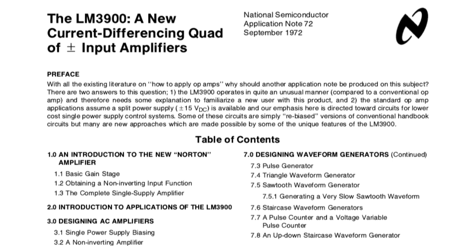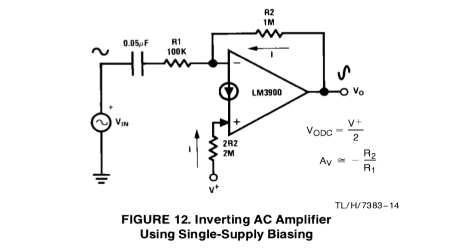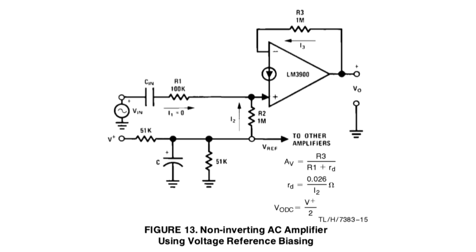And when used with negative feedback, the output will try to produce whatever voltage and current is needed to maintain equal currents at the input, just the same way that a regular op-amp will try to produce whatever voltages and currents at the output that are needed to keep the voltage inputs equal.